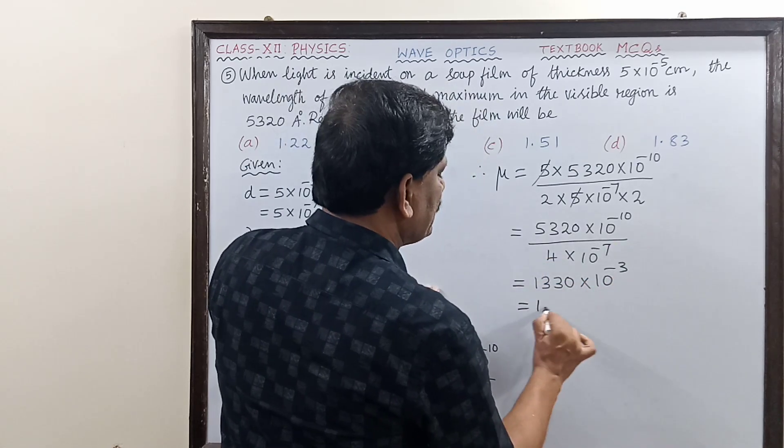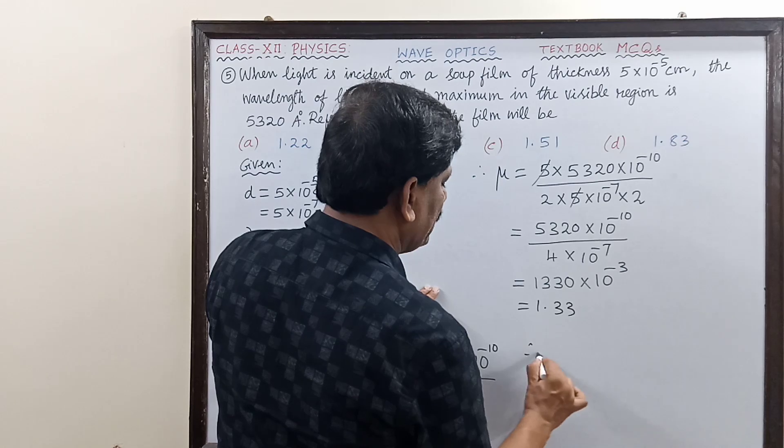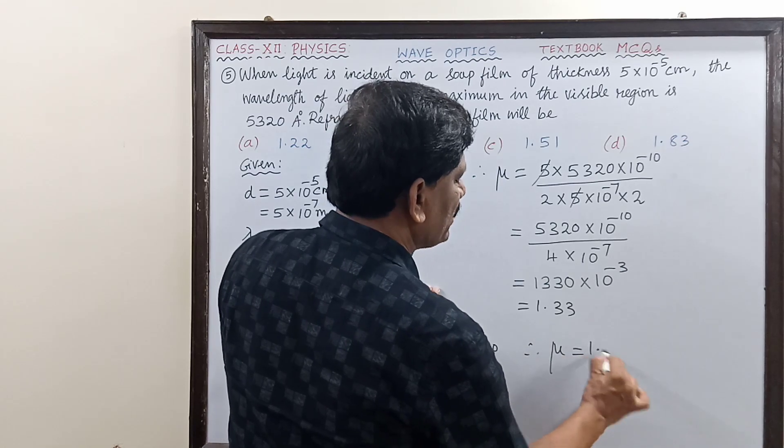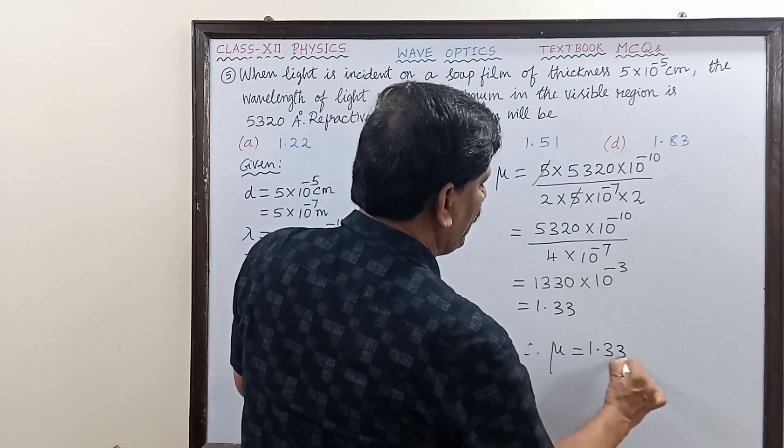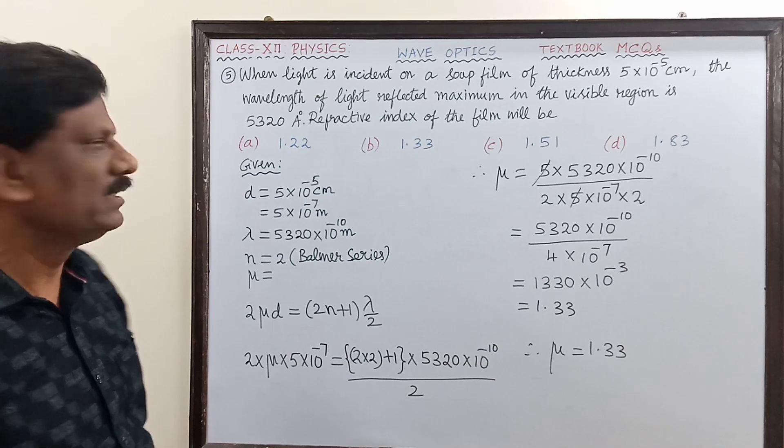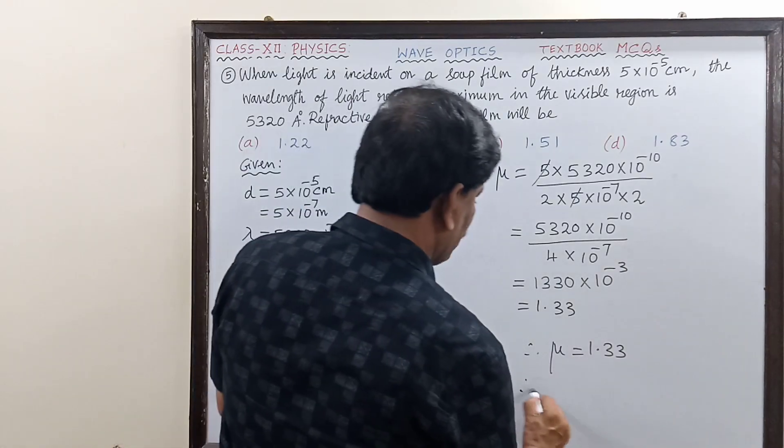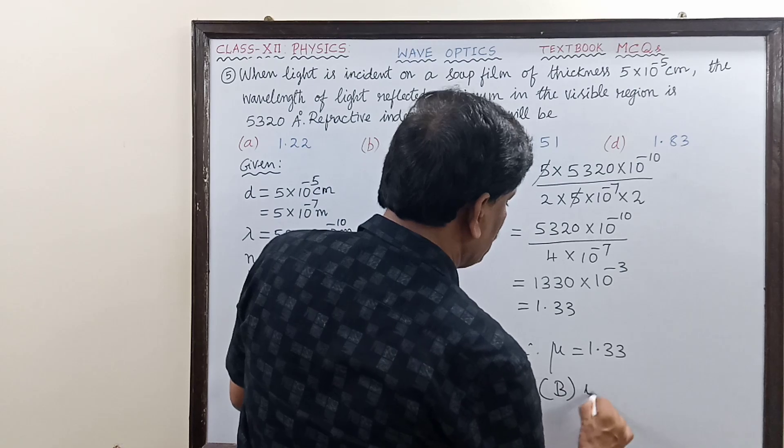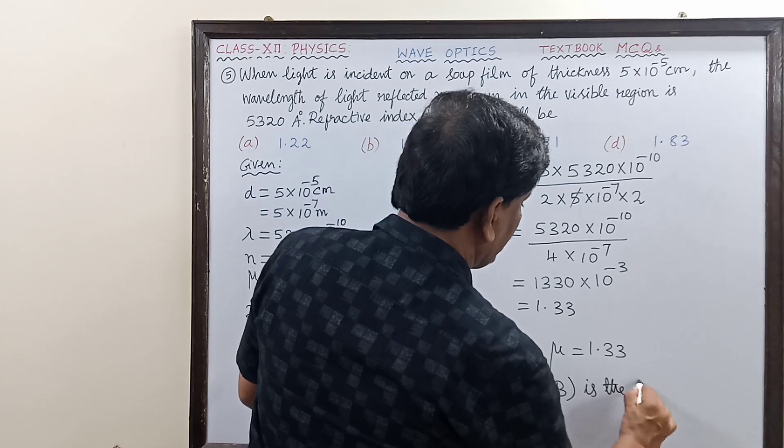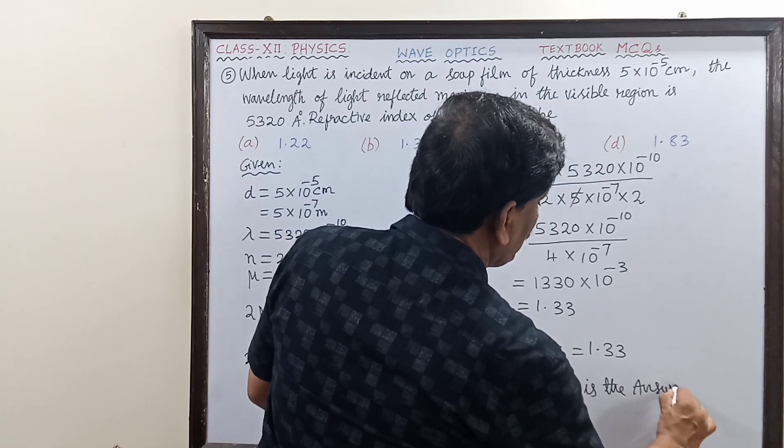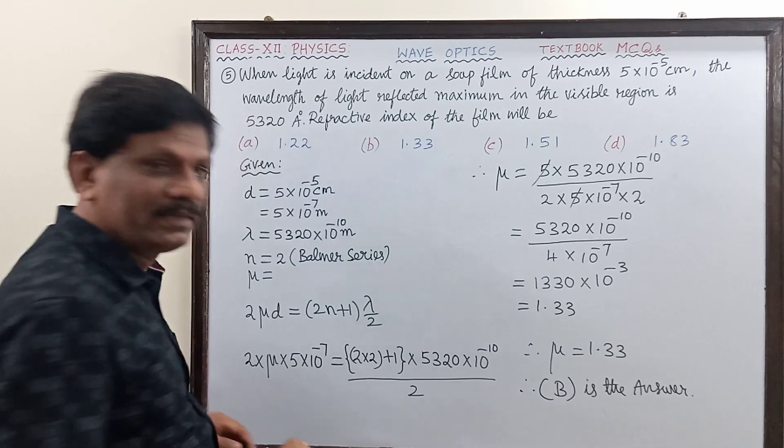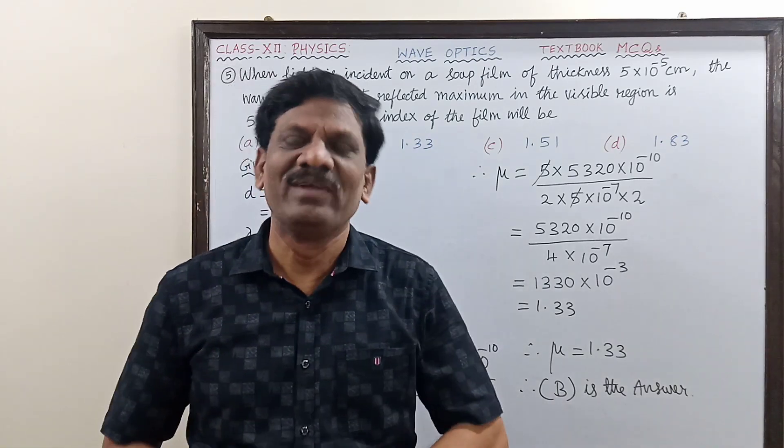This equals 1.33. Therefore, the refractive index of the soap solution is 1.33, which is the answer. Option B is the correct answer. I hope you have understood.